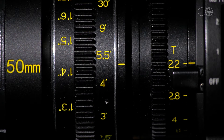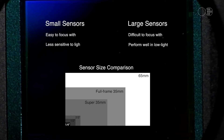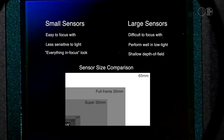Small sensors are easier to focus with than a large sensor. Large sensors are more difficult to focus. Big sensors perform better in low light, while small sensors are less sensitive to light. Big sensors produce a shallow depth of field effect, whereas small sensors produce the everything-in-focus look.